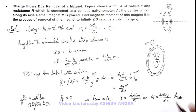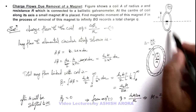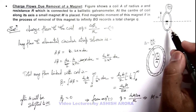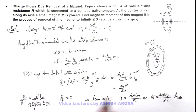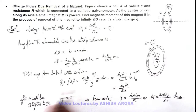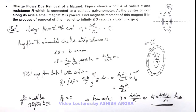If the coil is having n turns and n is given, then in that situation we multiply the total linked magnetic flux by n, and this n will also appear in the denominator of the charge formula accordingly. So here this is the final result.